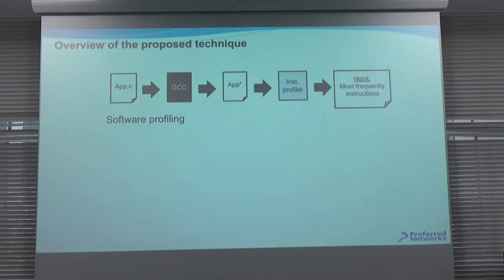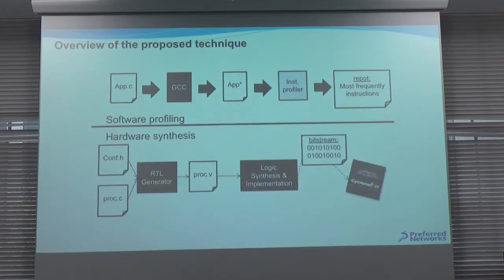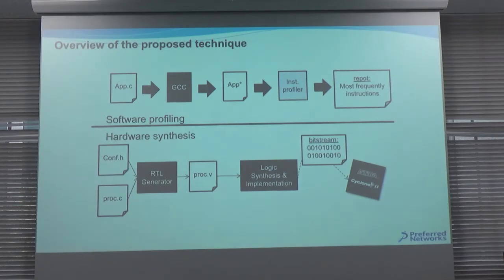Let's start with the overview. Usually when we do software development we write an application, compile it with GCC or another compiler, and do profiling to find out where we can further optimize the software. But here we take that profiling report as input for hardware development. We use a processor generation framework called process.c, configure it according to the report from software analysis, then use an RTL generator to produce very low-level code from high-level code. We can target different backends, for example FPGA or custom ASIC.